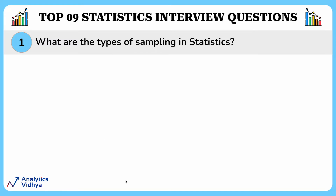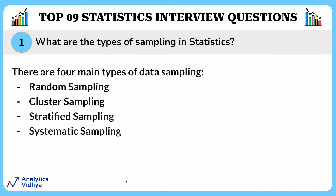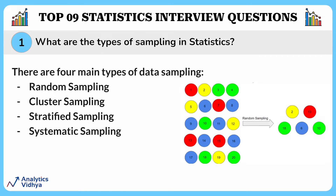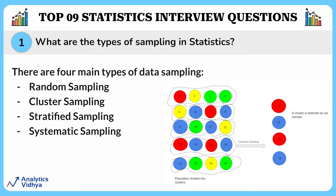There are four main types of data sampling. First is random sampling, where every individual is chosen entirely by chance and each member of the population has an equal chance of being selected. Second is cluster sampling, where we use the subgroups of the population as the sampling unit rather than individuals.